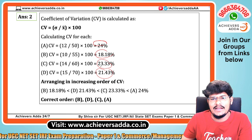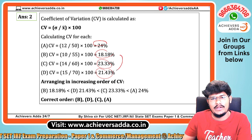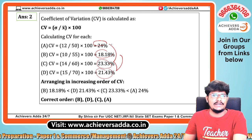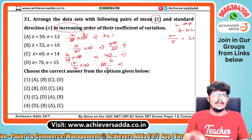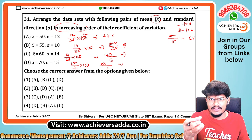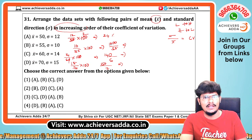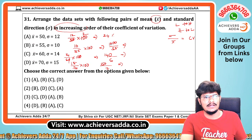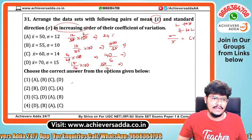In increasing order — lowest to highest — 18 is first, then 21, then 23, and 24 is the highest. The calculation takes time, so I am not doing it in detail here — you can do it yourself. The more questions you practice, the faster your calculation speed will be. So the answer is B, D, C, A.